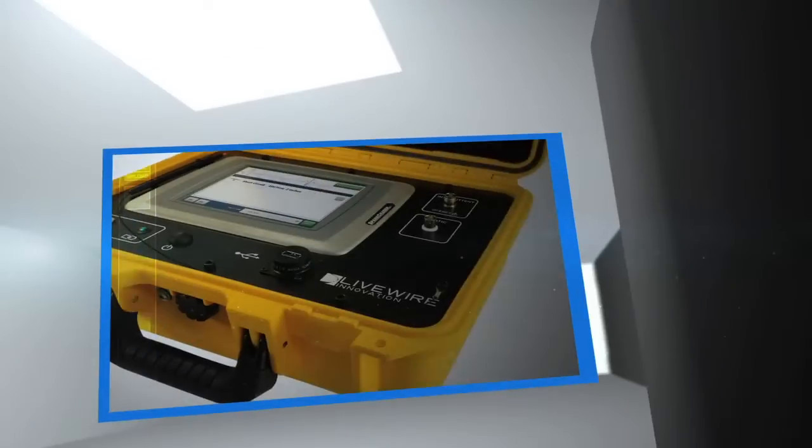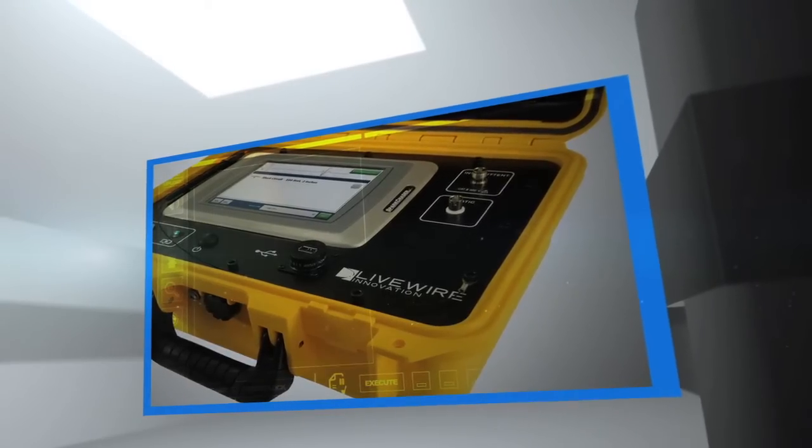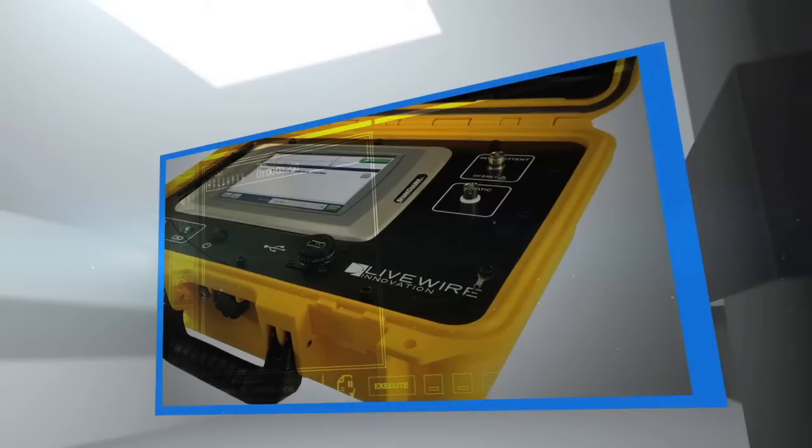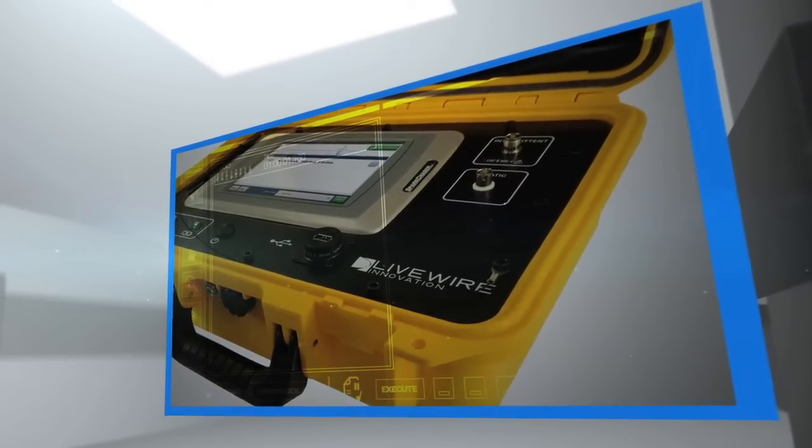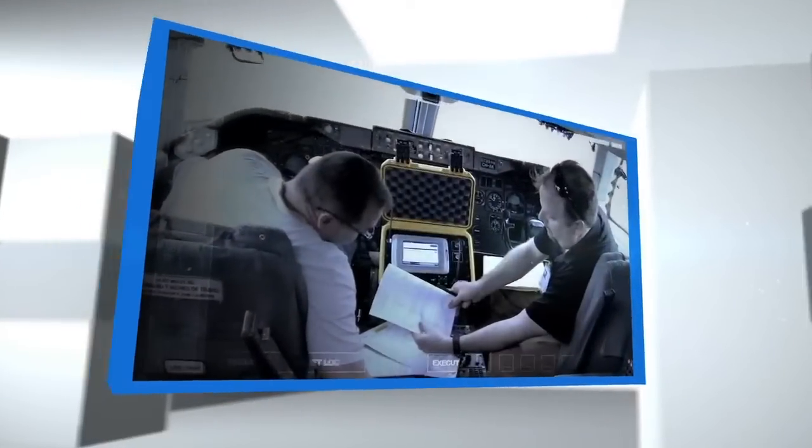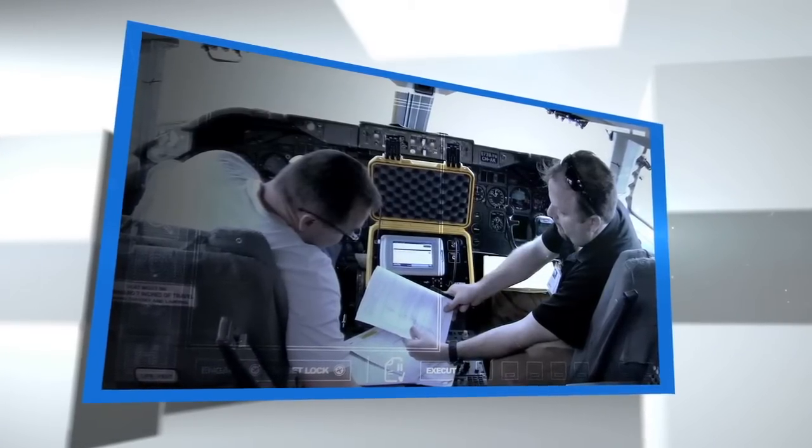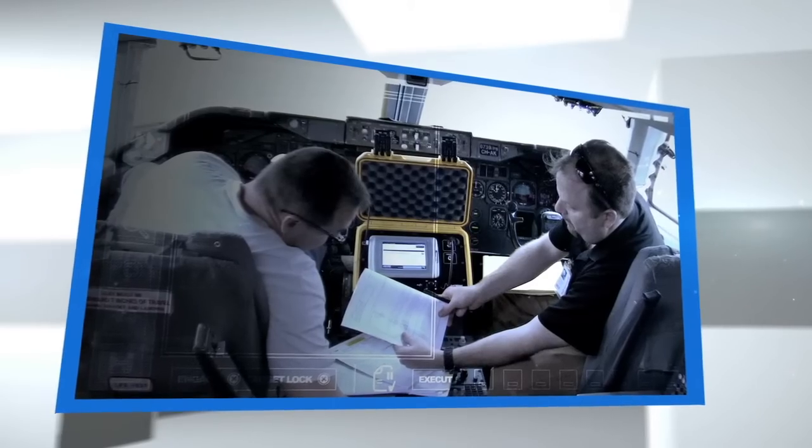Livewire Innovation's Spark Chaser is the first portable wiring tester capable of identifying and pinpointing the location of wiring faults, including arc faults on both live and deactivated systems. The Spark Chaser's revolutionary technology allows technicians to quickly locate and repair damaged wiring, including hard-to-duplicate intermittent failures.